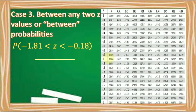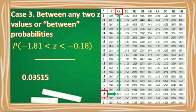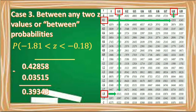Another example: find the probability of Z greater than negative 1.81 but less than negative 0.18. The area of negative 1.81 in the Z-table is 0.03515, and the area of negative 0.18 is 0.42858. Subtract the lesser value, 0.03515, from the greater, 0.42858. The difference is 0.39343. Therefore, the area of the Z-score greater than negative 1.81 but less than negative 0.18 is 0.39343.